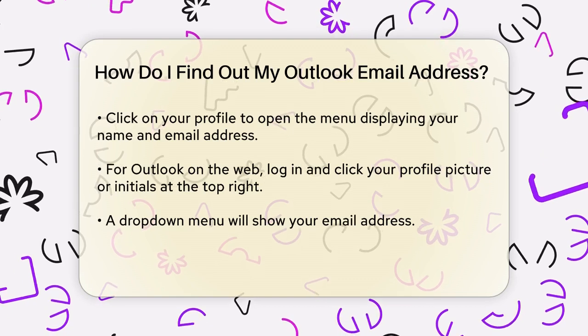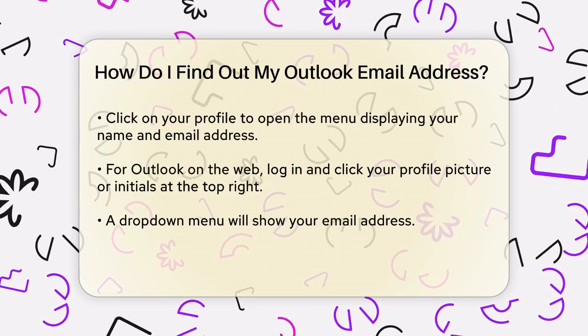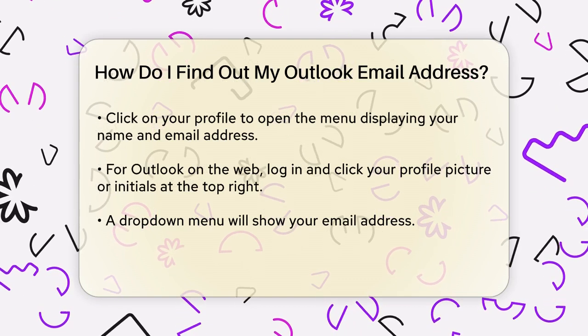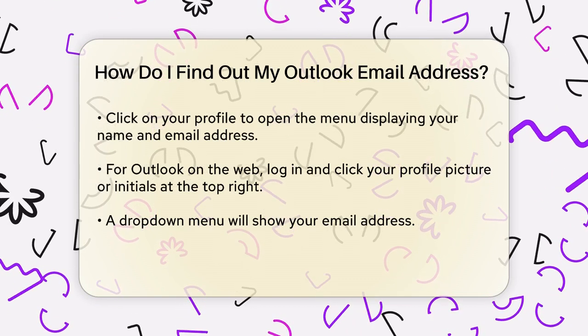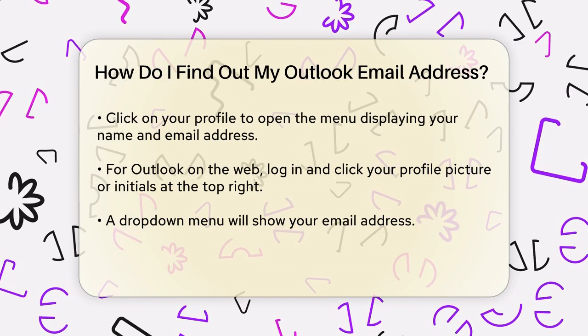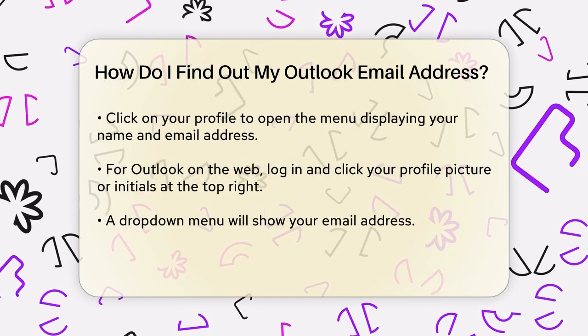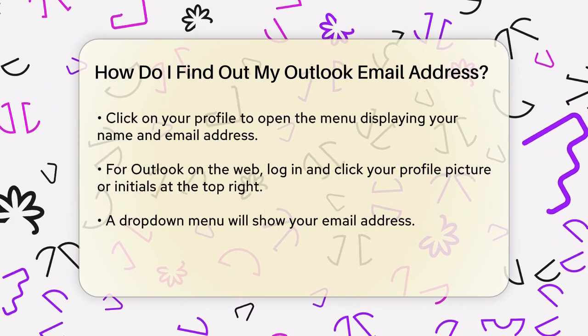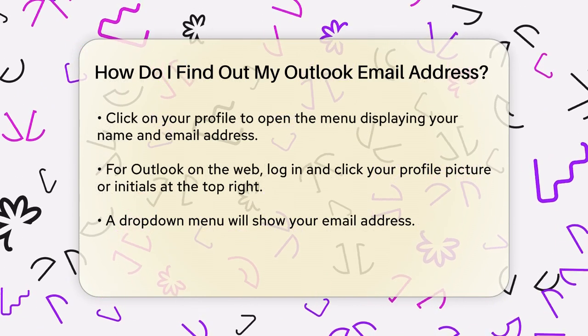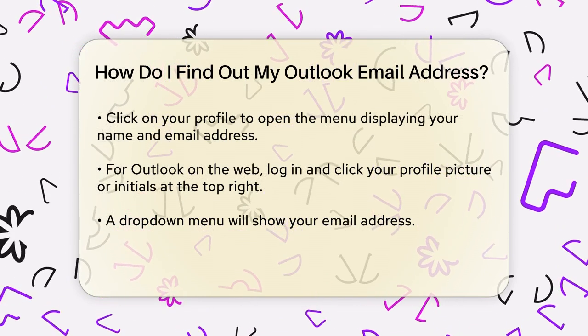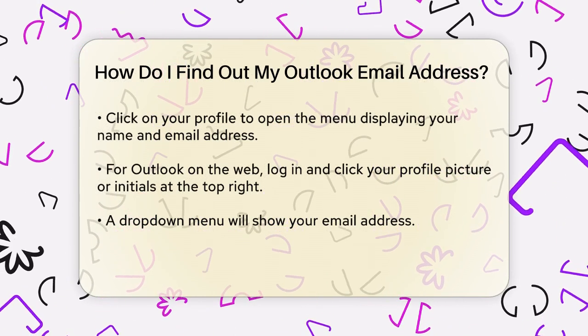If you're using Outlook on the web, log into your account and click on your profile picture or your initials at the top right corner. This will open a drop-down menu where you can see your email address.